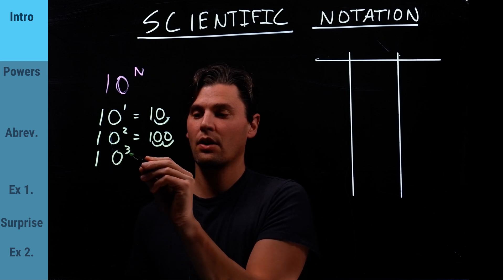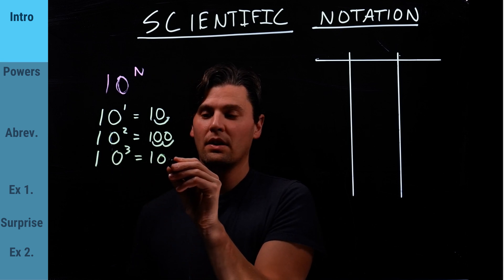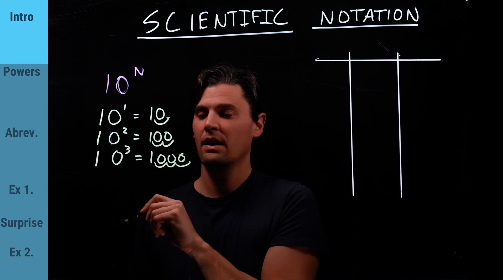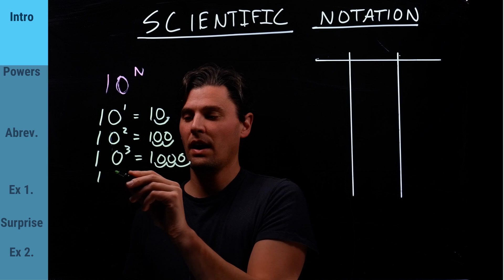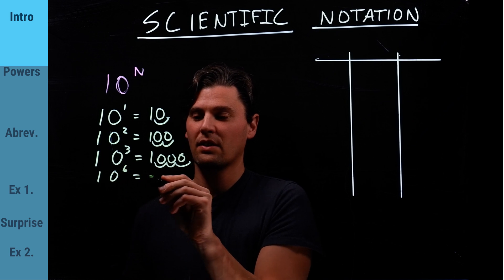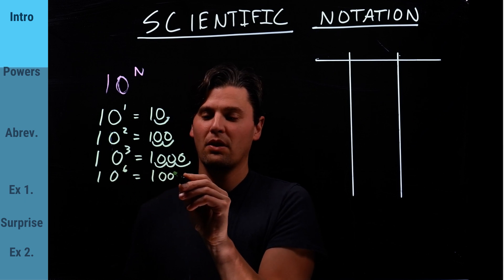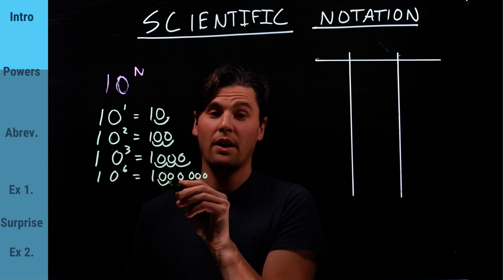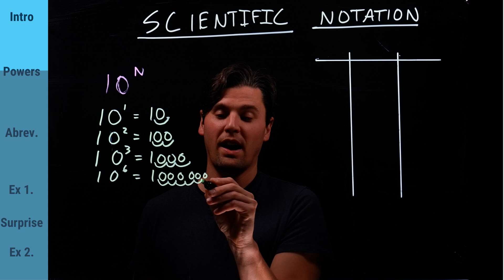Again, 10 to the 3rd is 1,000. 1, 2, 3. And likewise, I'll do 10 to the 6th. This is one we frequently do. That's 6 zeros there. So, 1, 2, 3, 4, 5, 6 zeros.